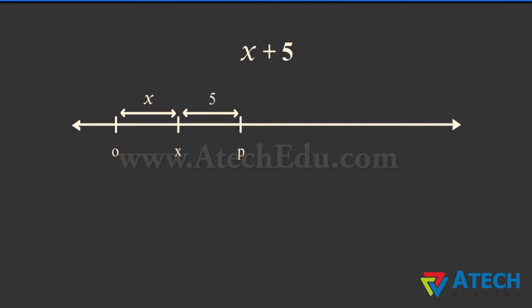Let us say that the variable x has a position x on the number line. The value of x may be anywhere on the number line. But, it is definite that the value of x plus 5 will be 5 units to the right of x.